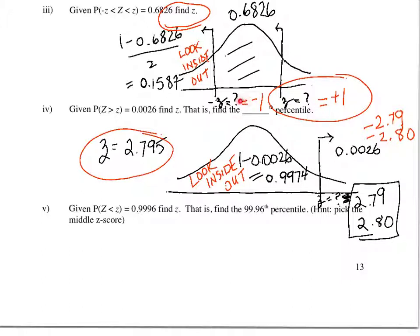What about the question: what percentile is this? The answer is the 99.74th percentile. Remember, percentiles are to the left. So this is the point — the 99.74th percentile — because 99.74% of the observations are on the left of 2.795.